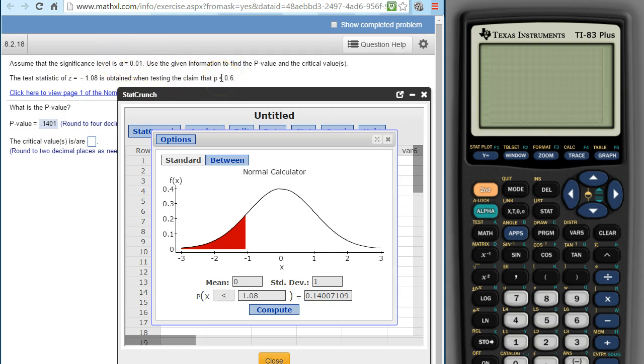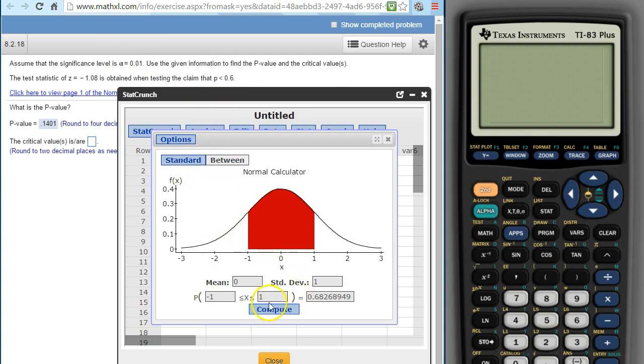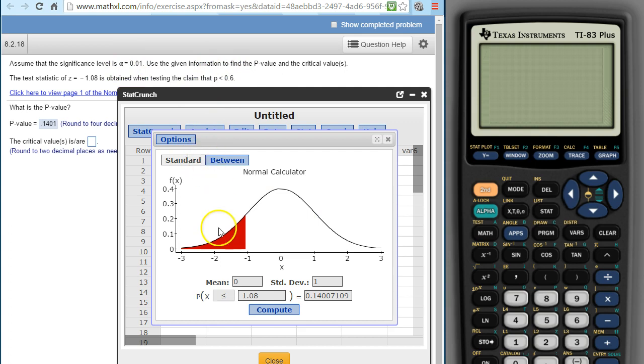If this was a not equal to, then we would have to go to a between and compute the lower and the upper. But because it is a left-tail, because it's strictly less than, if this were strictly greater than, it would still be a standard that we would use greater than. But because this is less than, we're using less than, and alpha is our probability.